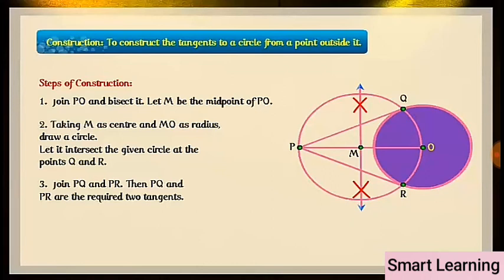Now let us see how this construction works. Join OQ. Then, angle PQO is an angle in the semicircle and therefore, angle PQO is equal to 90 degrees.